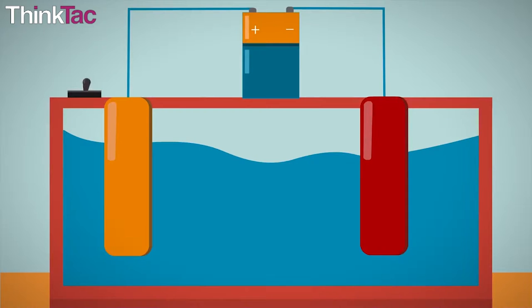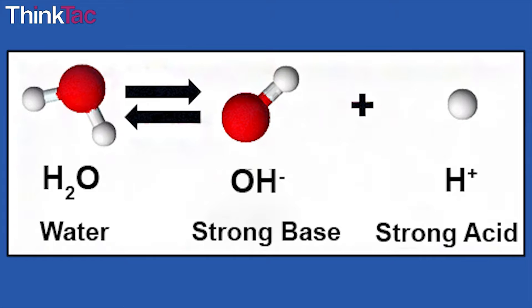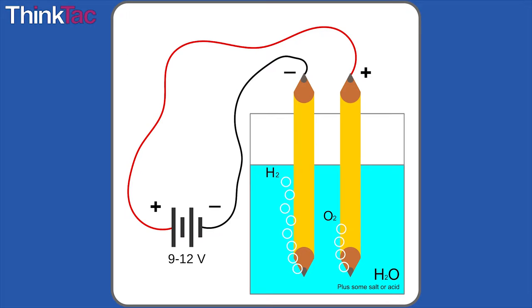As soon as the current starts flowing from the cell to the water, its ions dissociate into hydroxyl, which is OH-, and hydrogen, which is H+, ions. Now the pencil attached to the negative terminal of the battery collects hydrogen, while the one connected to the positive terminal of the battery collects hydroxyl ions.